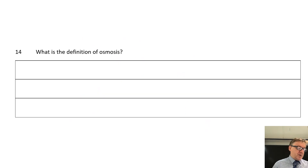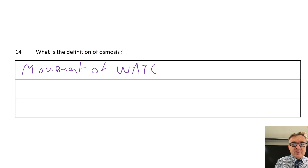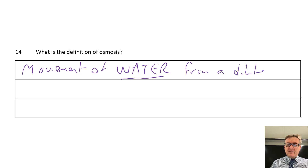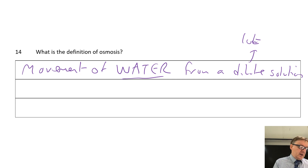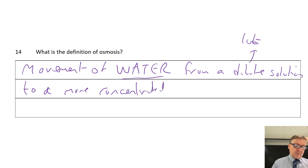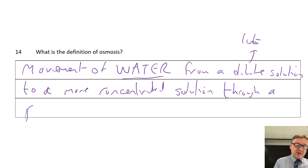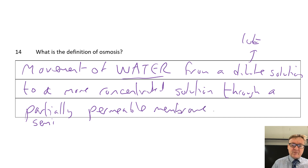Question fourteen: what is the definition of osmosis? Osmosis is the movement of water from a dilute solution - that means there's a lot of water - to a more concentrated solution, through a partially or semi-permeable membrane. This uses no energy and is therefore a passive process.